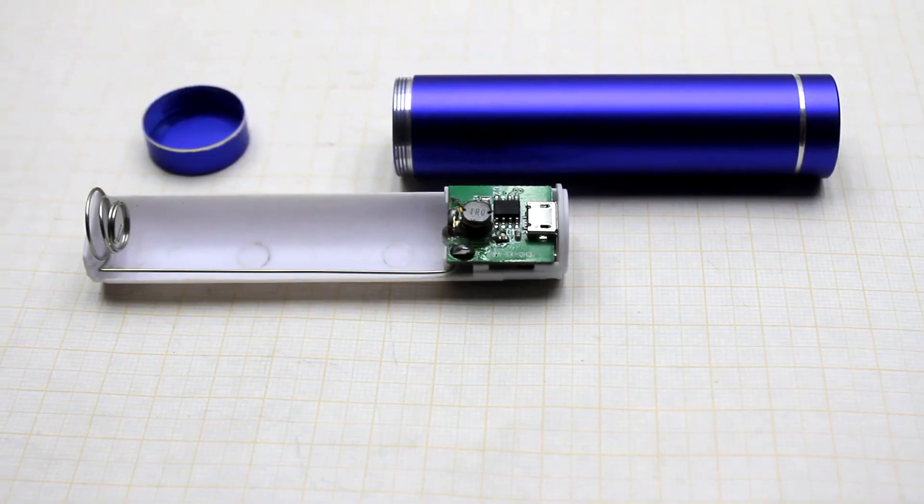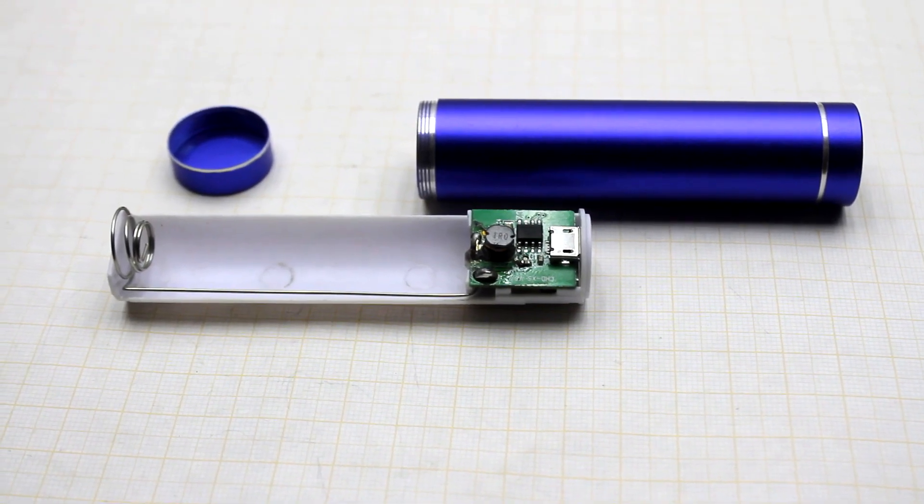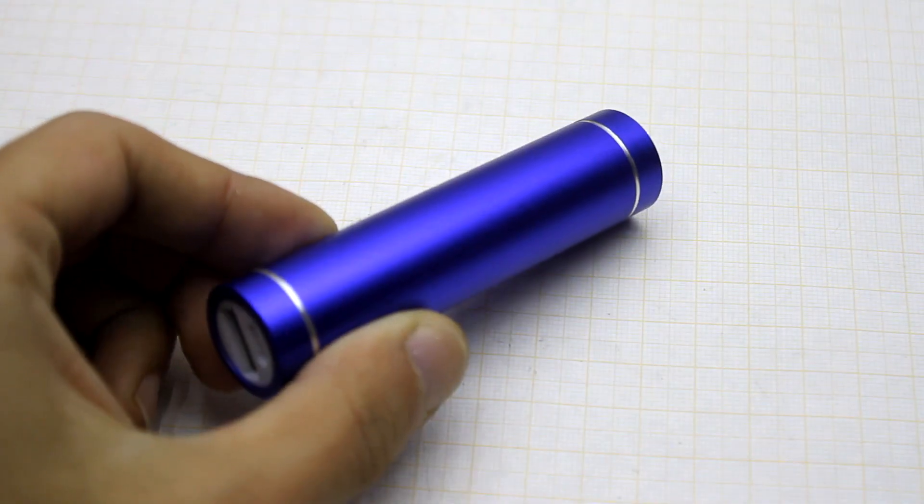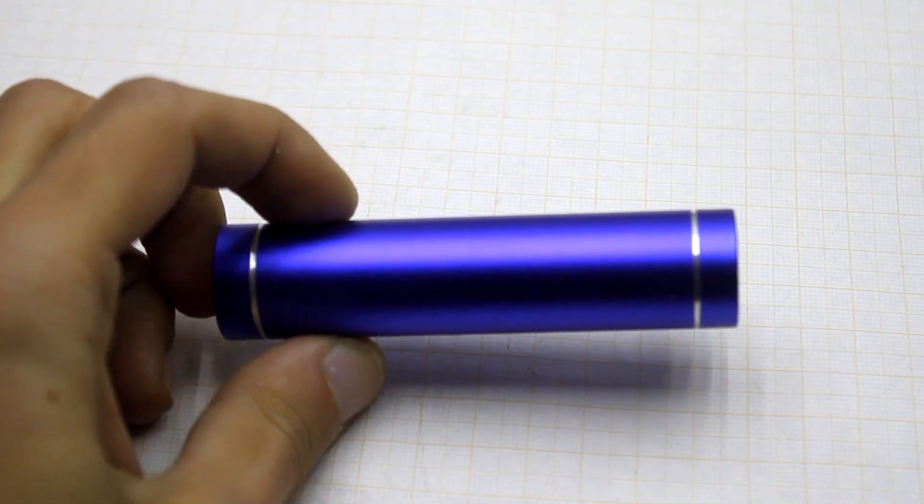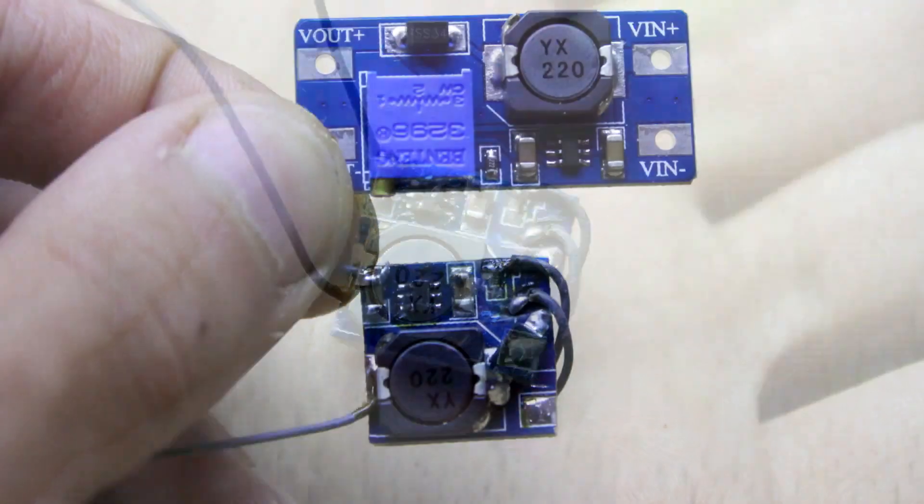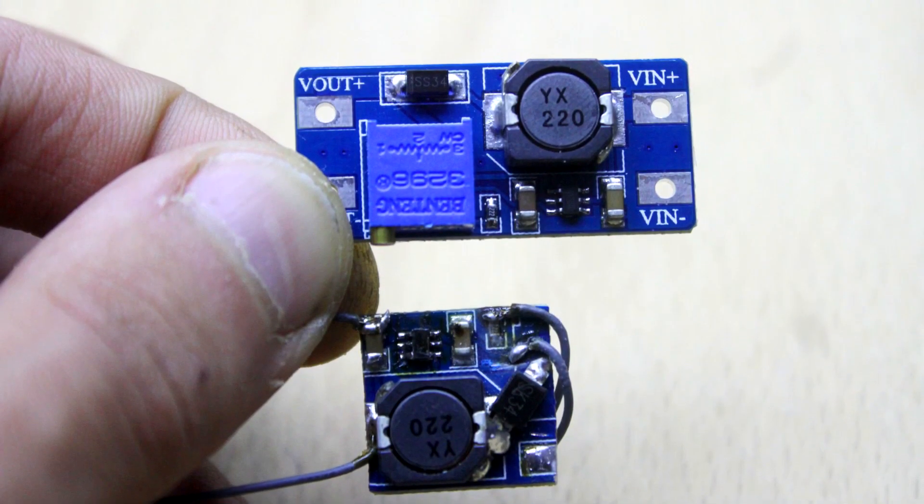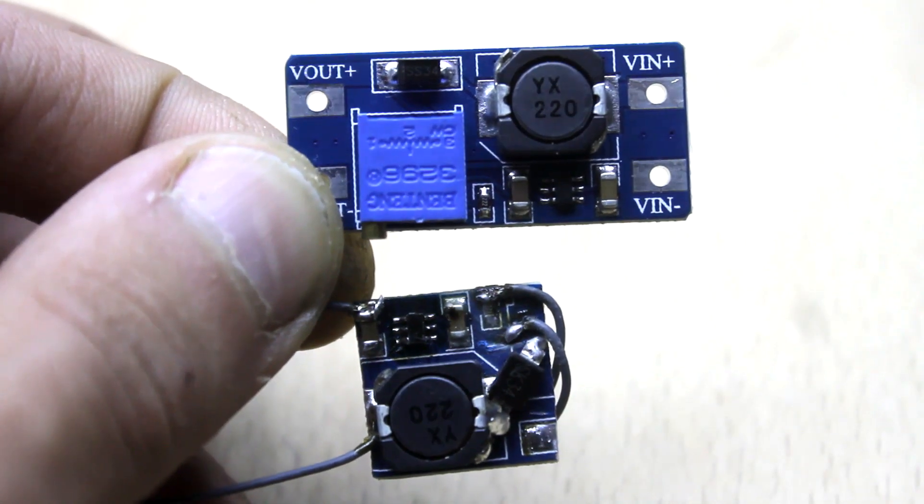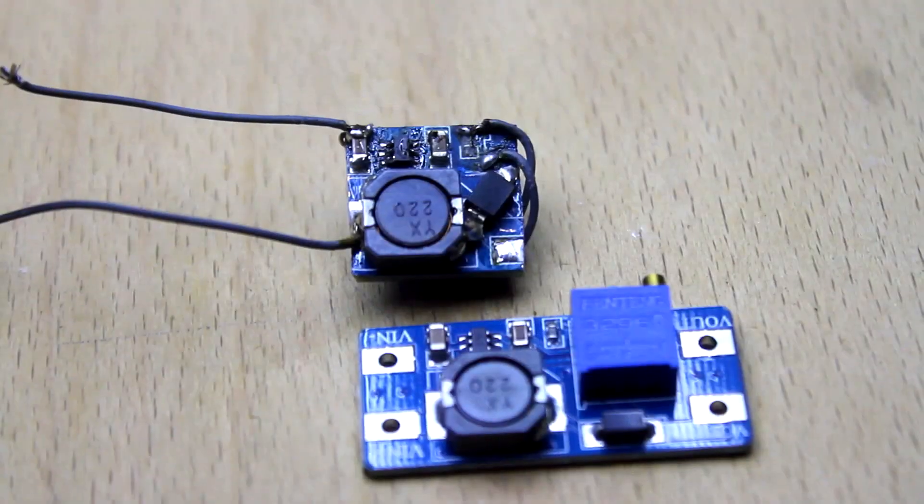My box unfortunately wasn't large enough, and the converter board simply didn't fit on it. But I didn't want to change the case, and eventually I decided to cut the converter's board. That's what I got. The sizes have decreased by 2.5 times. Let's go further.